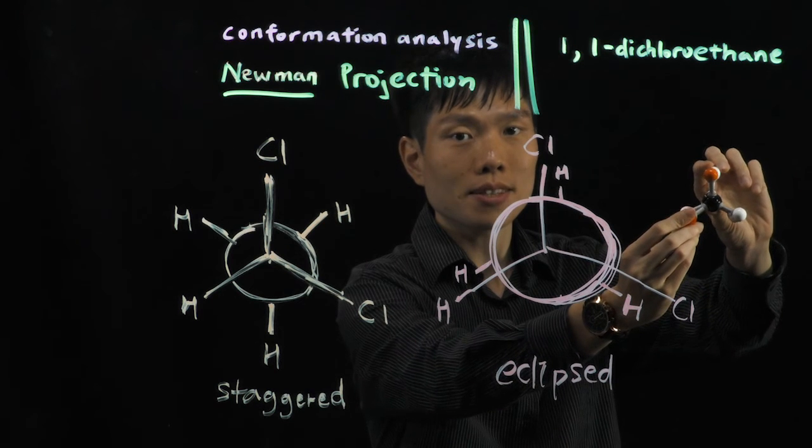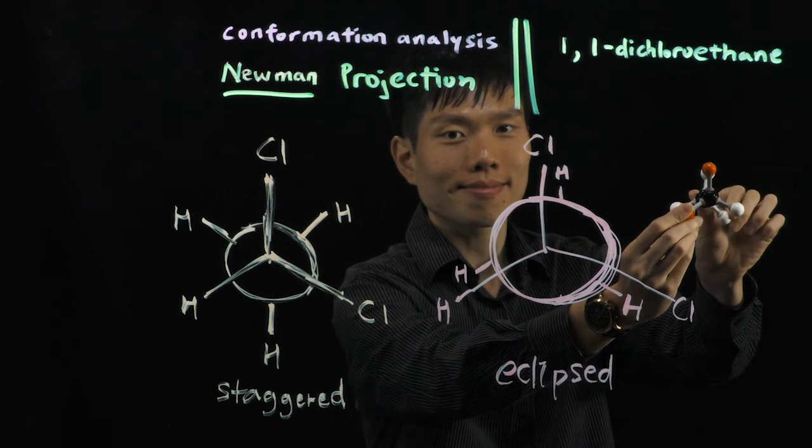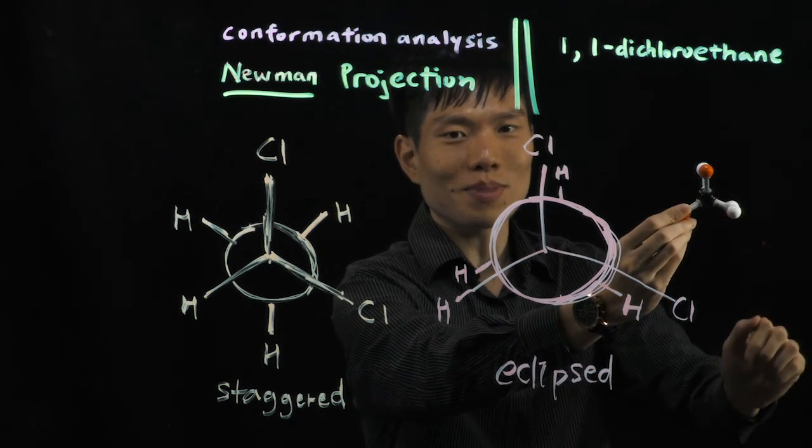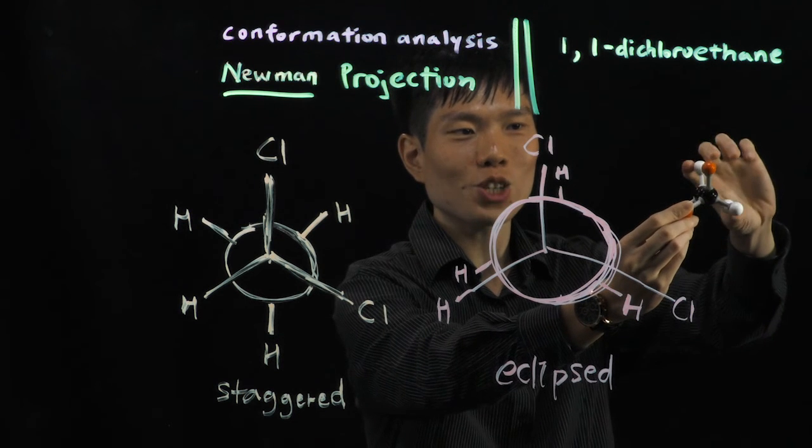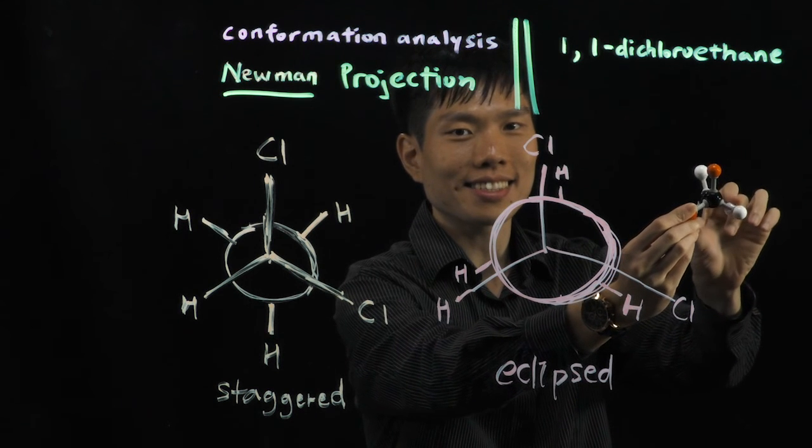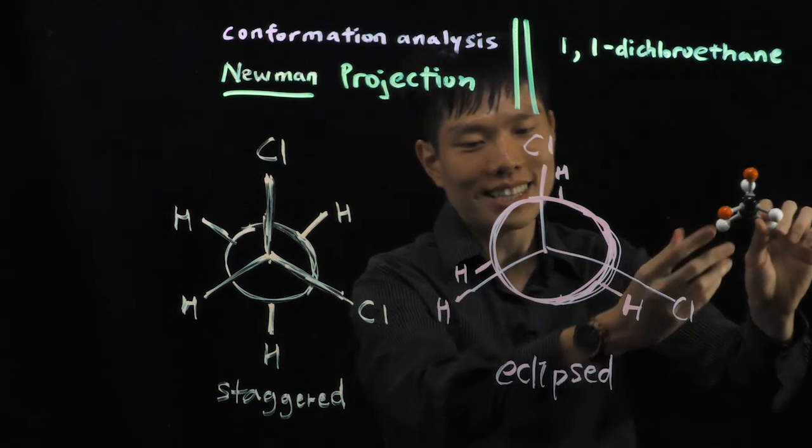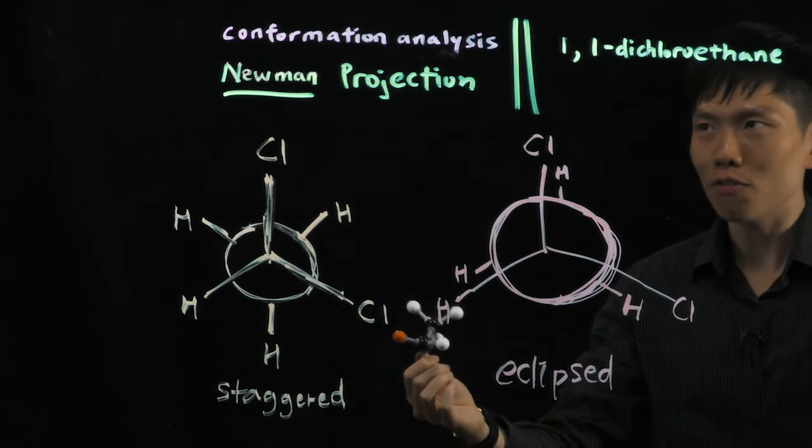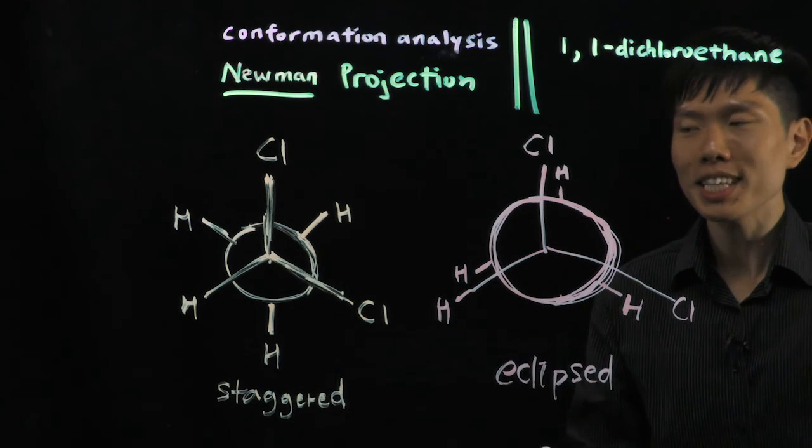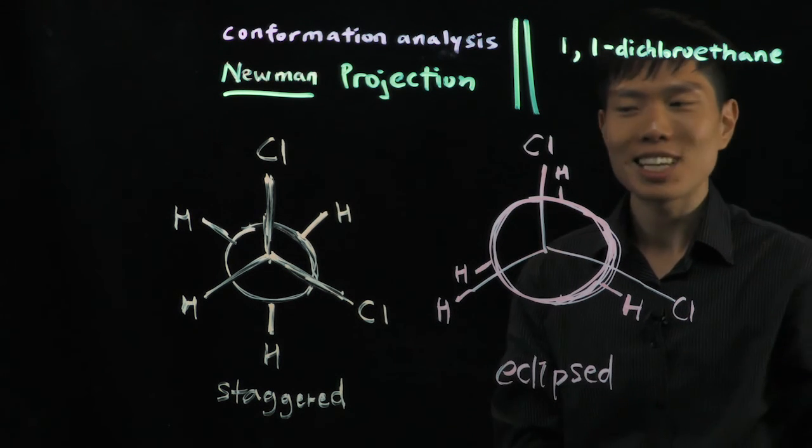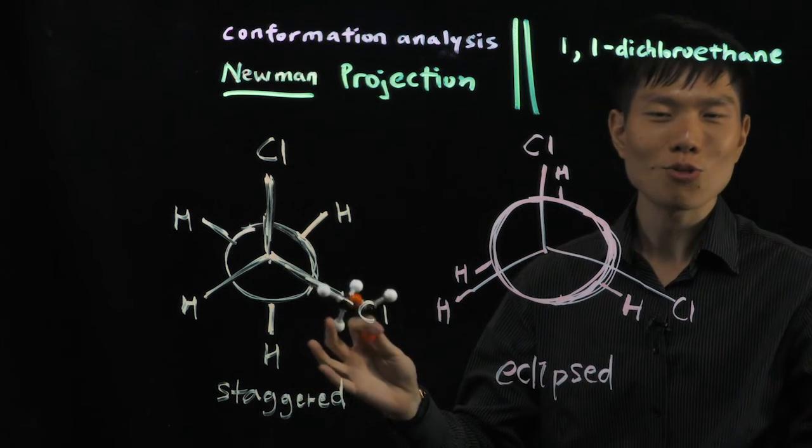I can rotate the back carbon. It's going to be the same eclipsed conformation as just now. No change. Rotate again. No change. So, that's why there's only one form of eclipsed conformer for 1,1-dichloroethane, which means that all in all, there are only two different Newman projections you can draw for this molecule.